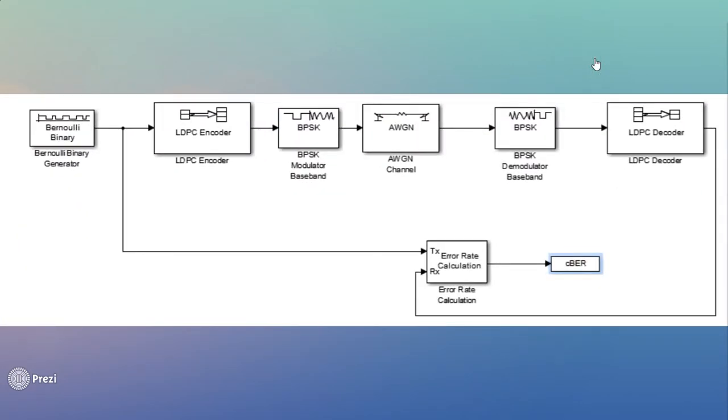This is the system that I simulated using Simulink. The input from the Bernoulli binary generator goes into the LDPC encoder where it is appended with parity. Then it goes to the modulator as the LDPC requires its inputs to be in the form of the log likelihood ratios. Then passing through the noisy channel which incorporates the errors, it goes to the demodulator.